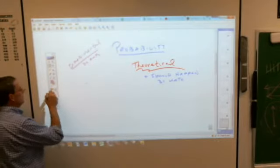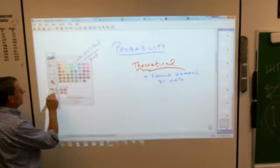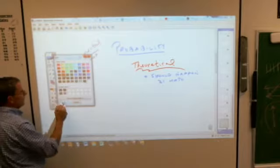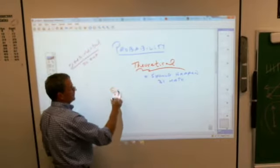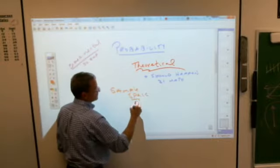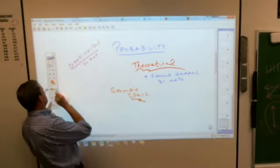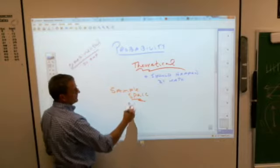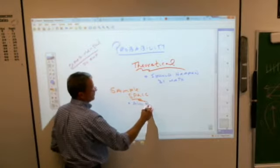Here's what we have to understand here. When you talk about theoretical probability, we have what's called the sample space. Anybody know what sample space is? All the possibilities. Yes. All possibilities.